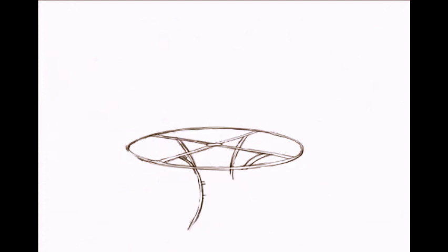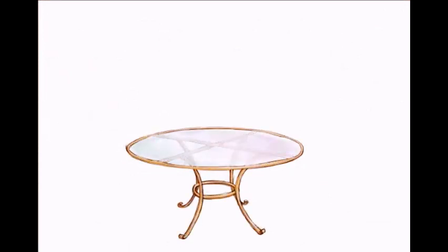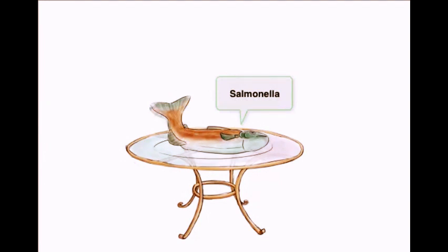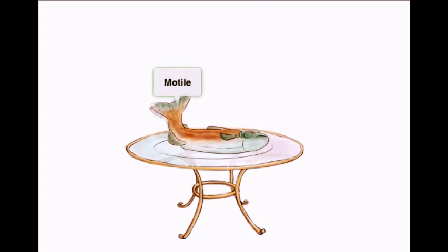Let's start by drawing a table, and on top of the table we'll have our salmon dish. A little thing we'll include is having the tail flopping around just to give action to it, so that you remember that Salmonella is motile. That's a big feature — Salmonella is motile.